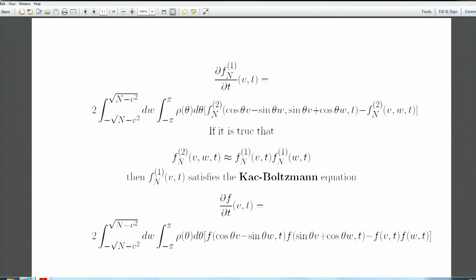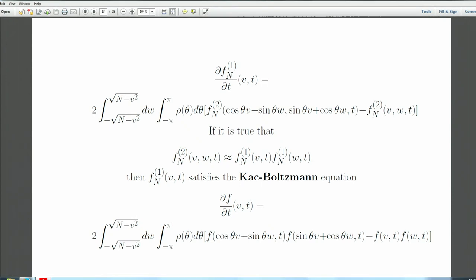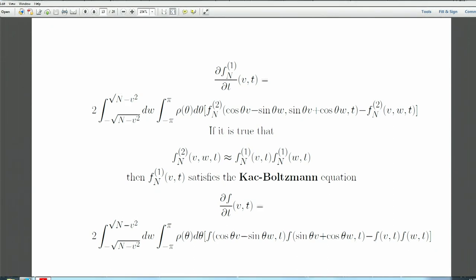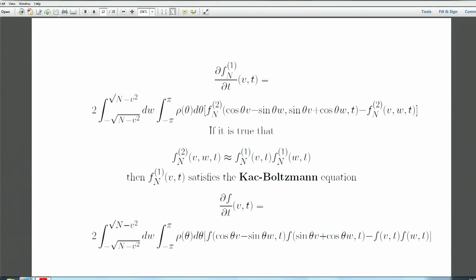This derivative turns out to involve the two-particle marginal. If we knew that f_{n,2}(v,w) were approximately a product, then the one-particle marginal f_{n,1} would satisfy an equation of Boltzmann type. Of course it's not really true that this product factorization holds exactly — and this is where the notion of propagation of chaos comes in.